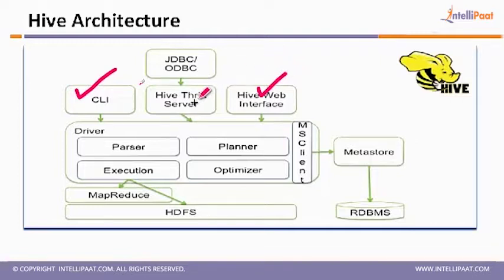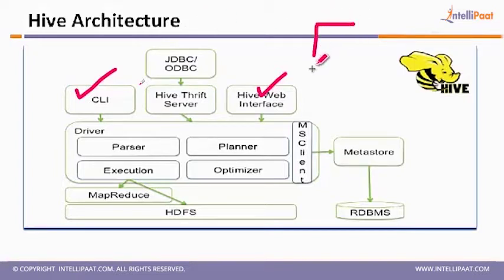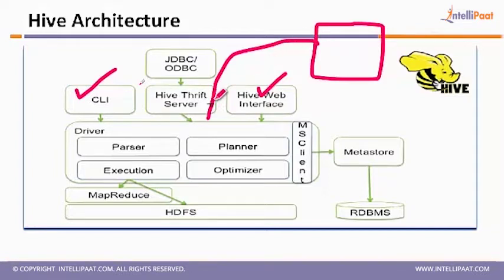The next interface is the Thrift Server. You can invoke or trigger Hive queries from an external system using JDBC or ODBC. JDBC means Java Database Connection; ODBC allows connections beyond Java. Hive always runs a server called HiveServer2. An external client who is not part of the Hive cluster can connect to it using the Thrift Server, which sends requests to the execution engine and delivers responses back to the client.